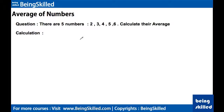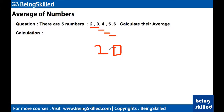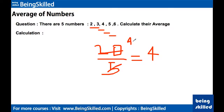Now let's do some questions. We have five numbers: 2, 3, 4, 5, 6. If we add them up: 2+3 is 5, plus 4 is 9, plus 5 is 14, plus 6 is 20. So 20 divided by 5 equals 4. This is how we calculate the average of numbers.